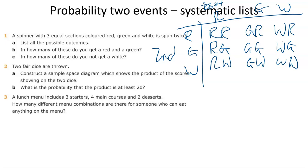And now I can answer the questions. In how many of these do you get a red and a green? Well, you can just look through. One there, one there. There's two red-greens. And in how many of these do you not get a white? So all of these contain white. So there are four that do not contain white.